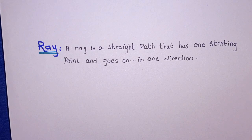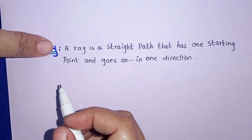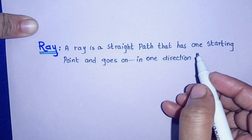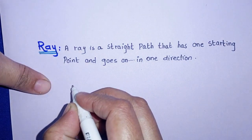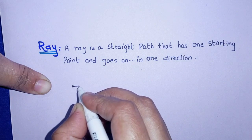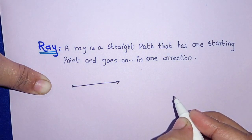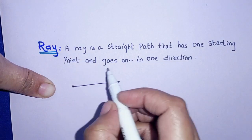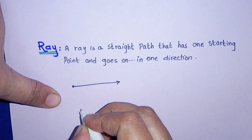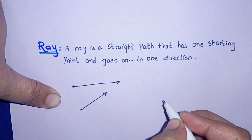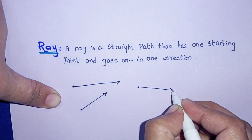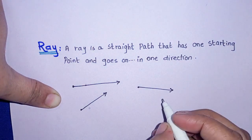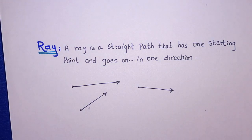Now we have come to our last concept — 'ray'. In Urdu, ray means 'shua' (beam/ray of light). A ray moves in one direction just like a ray of light. The definition: a ray is a straight path that has one starting point but no ending point. It travels in a straight path in one direction indefinitely. For example, this ray has a starting point but no endpoint.